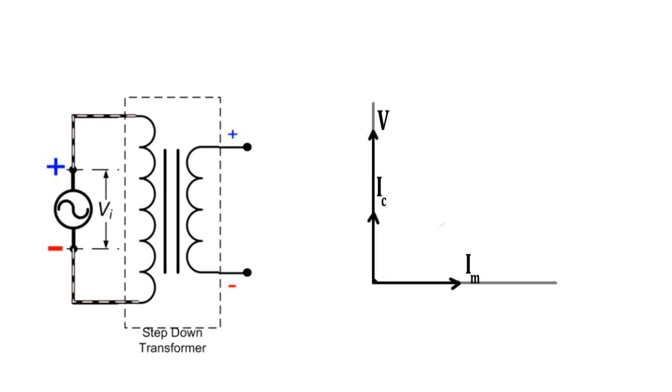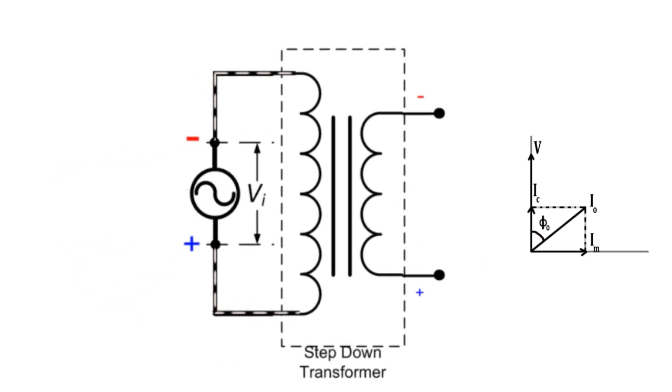So the resultant of these two components, I0, lags the applied voltage V1 by some angle phi0. You can see that I0 achieves its maximum amplitude after some time delay or angle phi0 from the applied voltage.